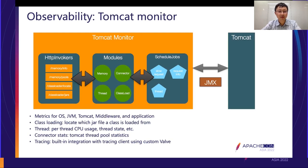Let's talk about observability. In Tomcat, we know that Tomcat provides JMX APIs to expose its internal stats. However, we found that developers have difficulty using JMX to retrieve those stats. So we built an extra module called Tomcat Monitor to retrieve Tomcat internal stats and expose them via an HTTP RESTful style.